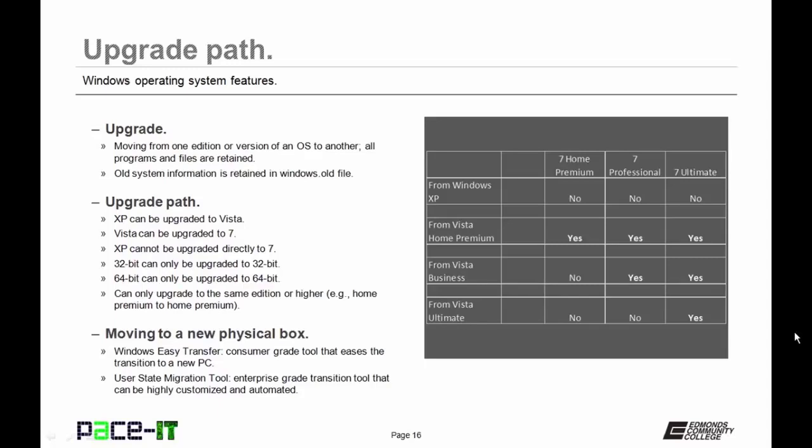You can only upgrade to the same version or higher. That means if you're on Home Premium, you can go to Home Premium and higher, but if you're on Ultimate, you've got to go to Ultimate. If you're moving to a new physical PC, you might want to consider Windows Easy Transfer — a consumer-grade tool that pulls information from the old machine and deposits it on the new machine.